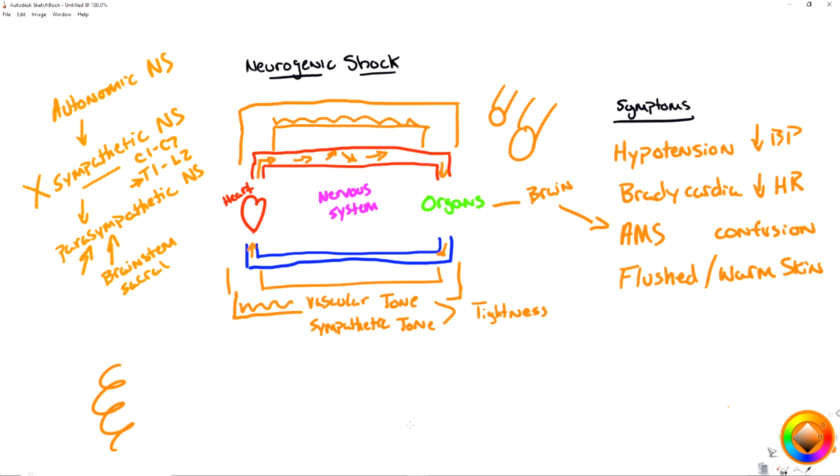I really hope that this diagram and this explanation helps you guys out. Just remember everything that you're thinking, shock and sympathetic nervous system, think backwards because in this neurogenic shock, the parasympathetic nervous system is in full control.